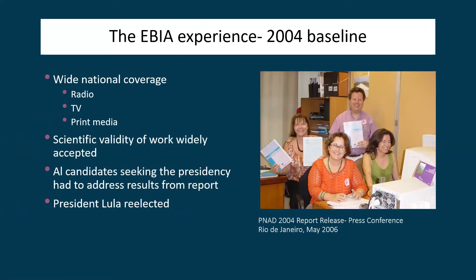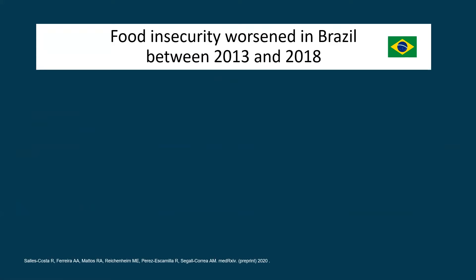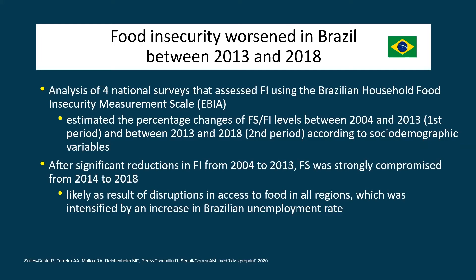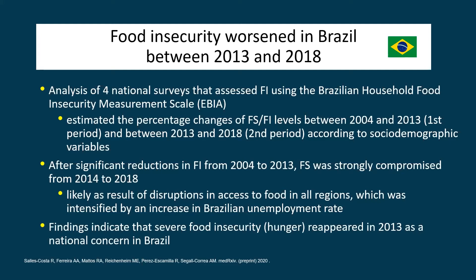We have also been able to show with EVIA and its repeated application that food insecurity worsened in Brazil between 2013 and 2018. This is very important because it shows that EVIA was powerful not only to show reductions in severe food insecurity when there were investments in more equitable social policies, but also to show worsening as a result of dramatic shifts in policies from newly elected political administrations in Brazil.